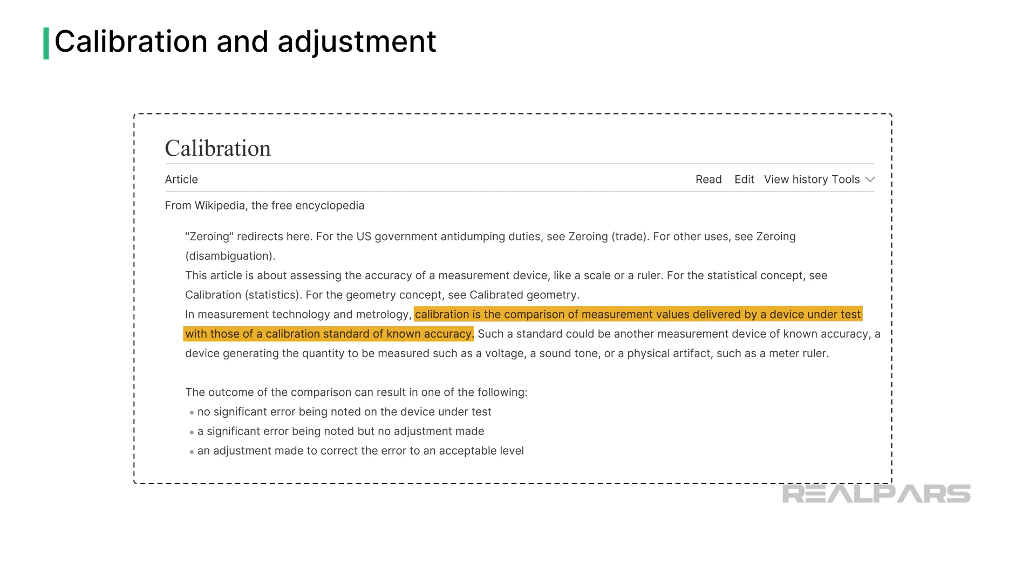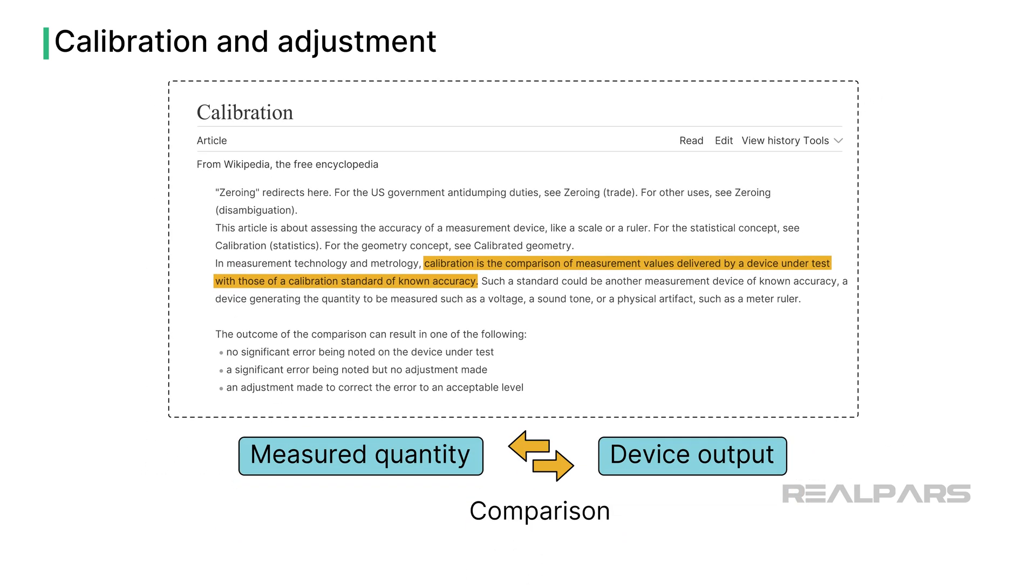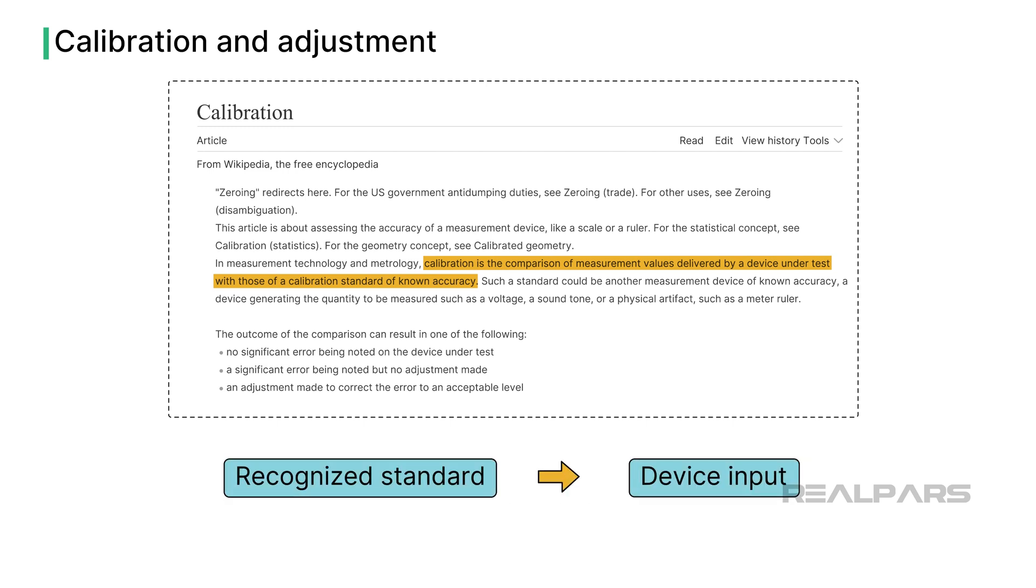After sifting through those definitions, we see two commonalities. The first is the experimental relationship or comparison between the measured quantity and device output. The second is the requirement for a recognized standard to produce the device input.